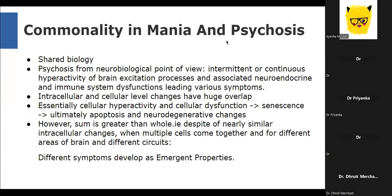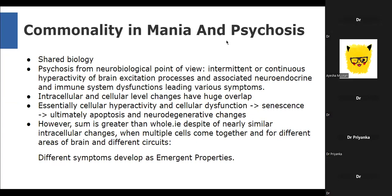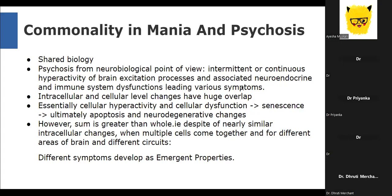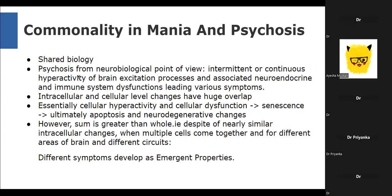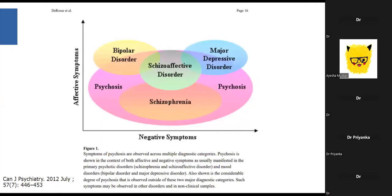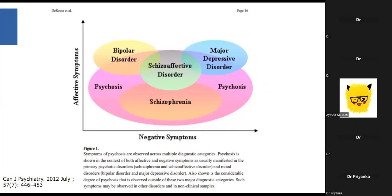Emergent properties arise where multiple components together lead to new properties not present in individual components. The cellular function and cellular pathology may be the same in mania and psychosis, but when they come together, different cells form circuits in different brain regions handling relatively different functions. Different circuits are implicated for different symptoms. This concept has been explained by DeRose in terms of the visual depiction of symptoms of psychosis overlapping with our clinical DSM and ICD diagnoses.